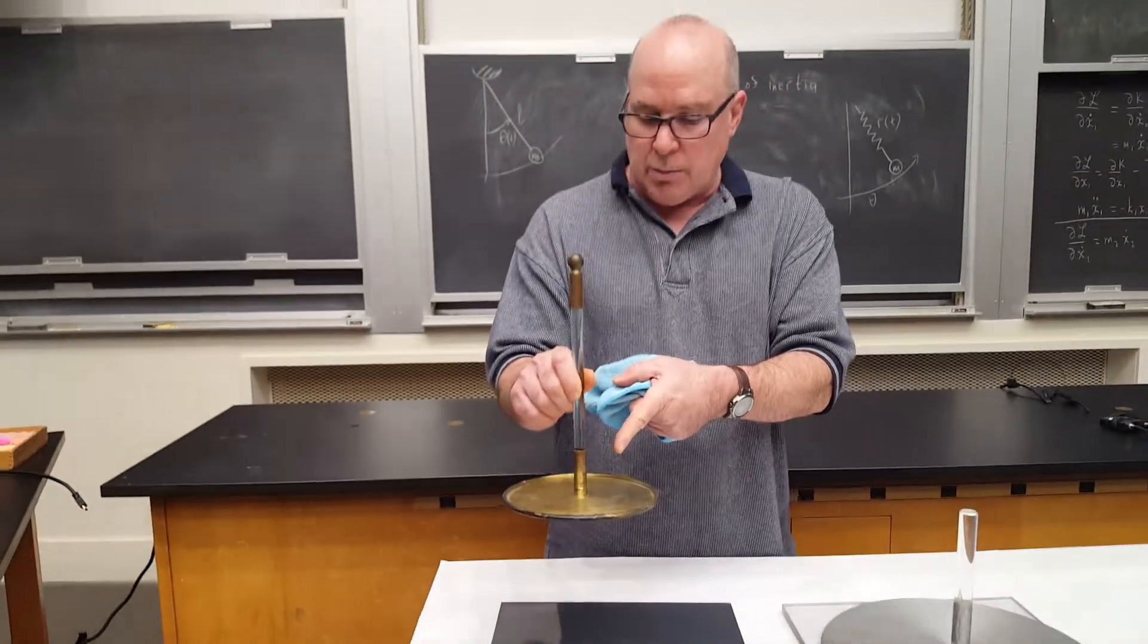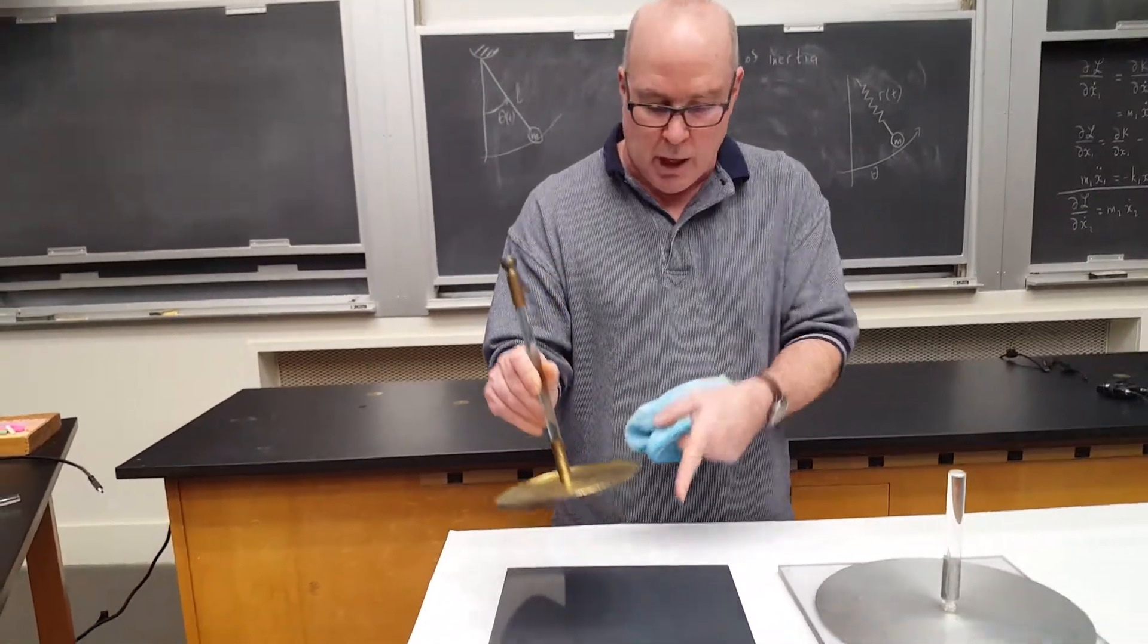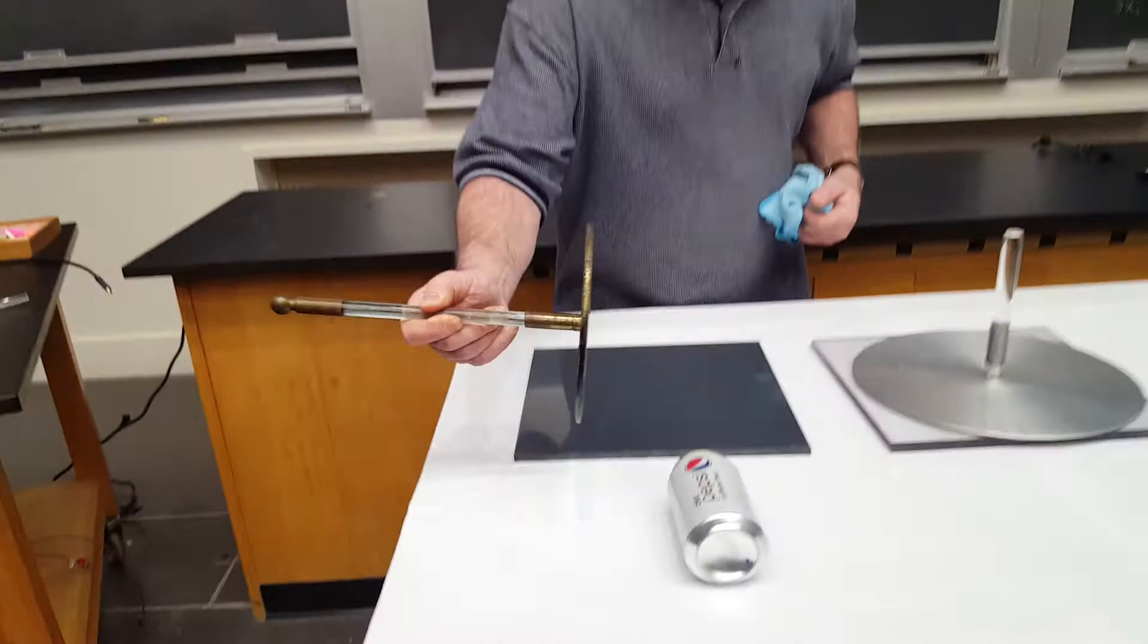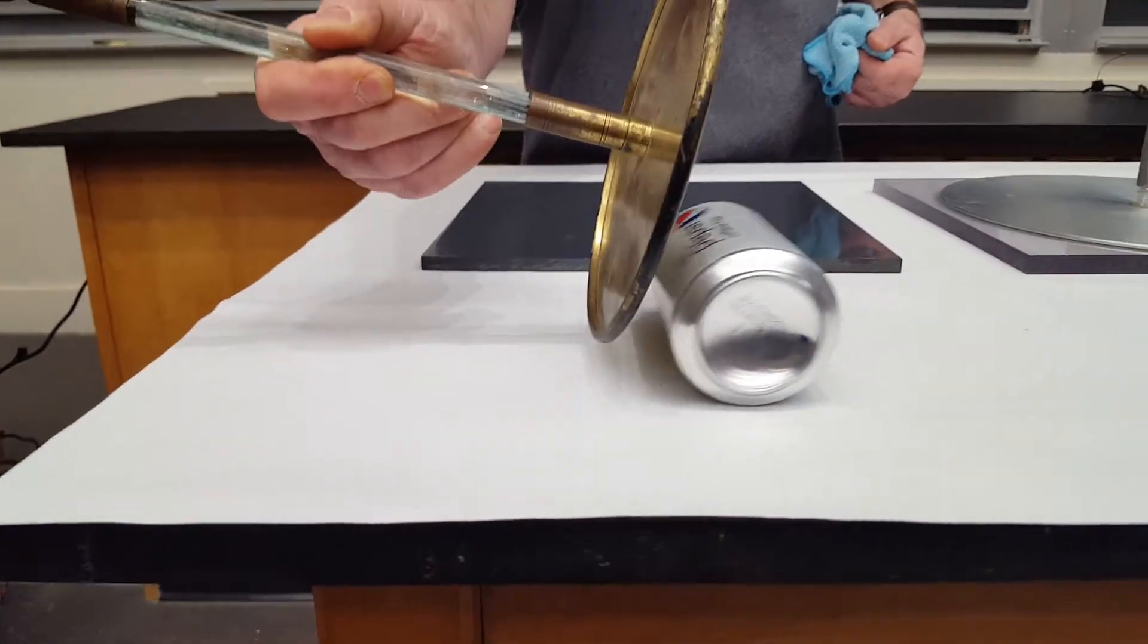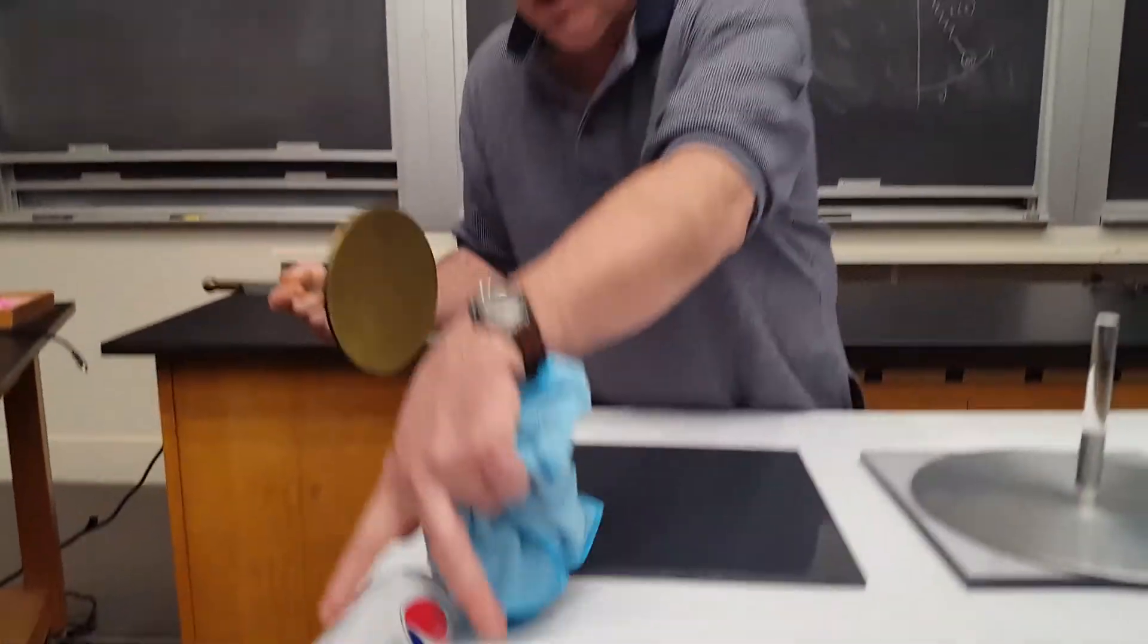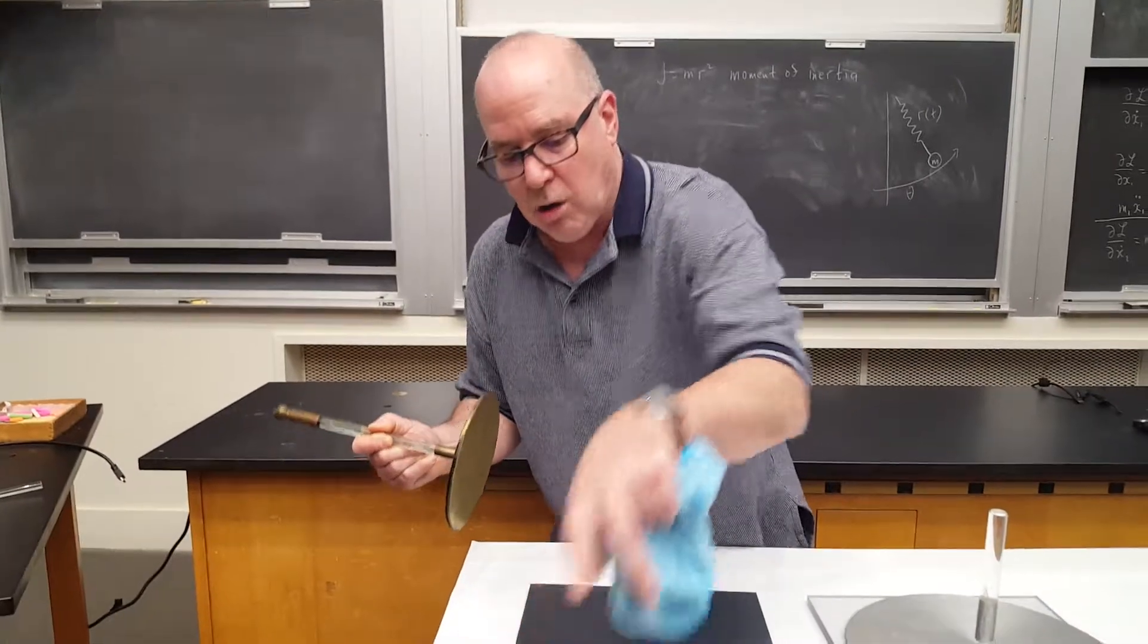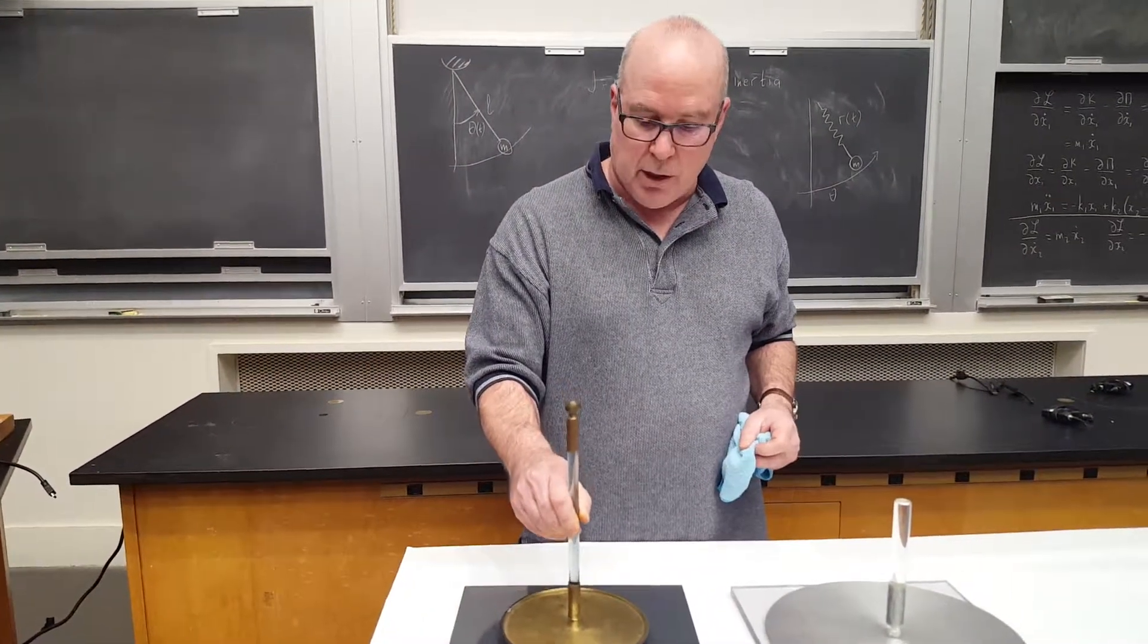Now by induction this plate is charged positive, the opposite of the PVC. Let me bring the positive charge near the coke can. By induction the coke can is also attracted to positive charge.